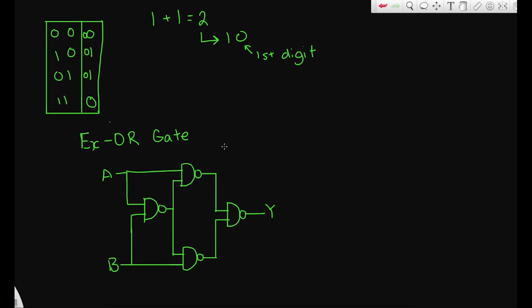This is the circuit for an XOR gate built from four NAND gates. Let's verify the truth table. For inputs 0, 0: all inputs to the first NAND are 0, so the NAND outputs 1. Then 1 and 1 into the final NAND gives 0. So output is 0, which is correct.